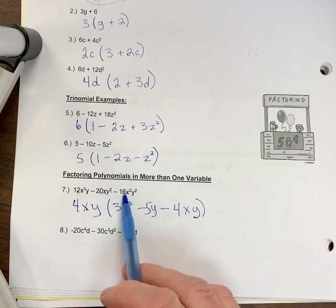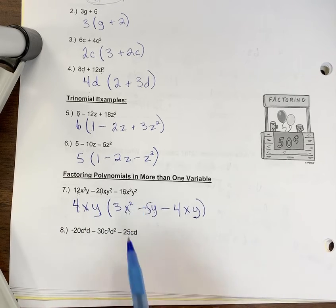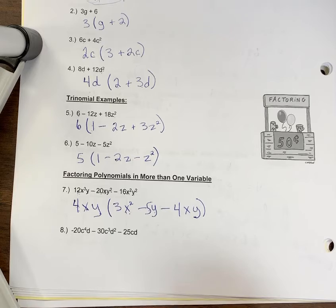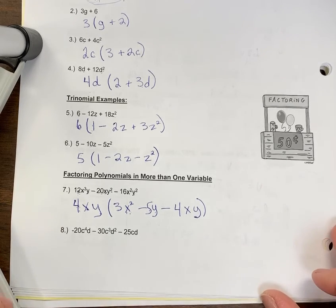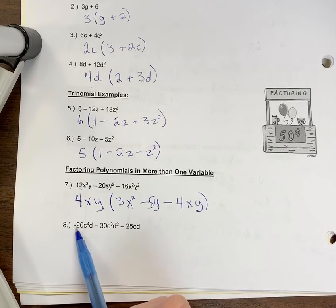4 times 4 is negative 16, xy times xy means you have x squared times y squared. Remember, you're adding exponents - another way to think about it. We're going to look at number 8 next. You can try it on your own.